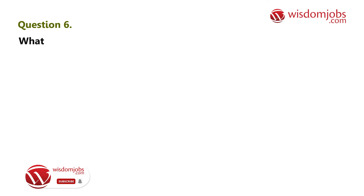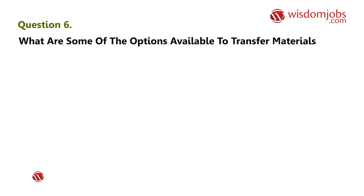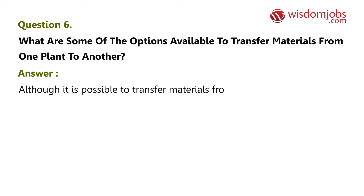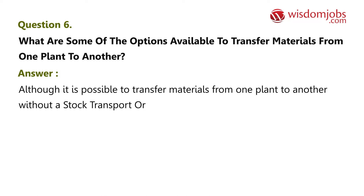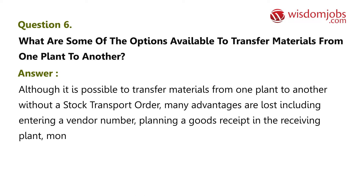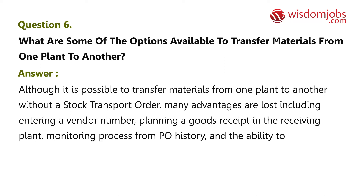Question 6: What are some of the options available to transfer materials from one plant to another? Answer: Although it is possible to transfer materials from one plant to another without a stock transport order, many advantages are lost, including entering a vendor number, planning a goods receipt in the receiving plant, monitoring the process from PO history, and the ability to create a store directly from a PR.